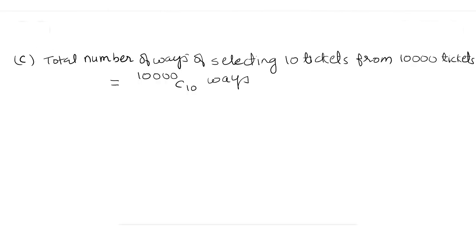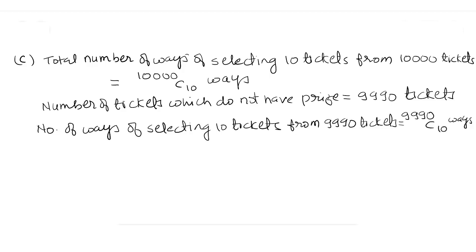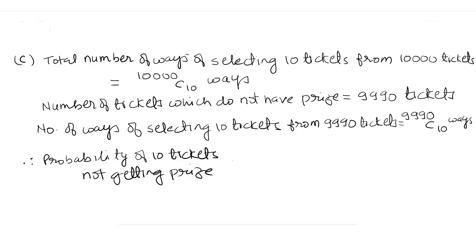Part C: total number of ways of selecting 10 tickets from 10,000 tickets equals 10,000C10 ways. The number of tickets which do not have a prize equals 9,990 tickets. The number of ways of selecting 10 tickets from 9,990 tickets equals 9,990C10 ways. Therefore, probability of 10 tickets not getting a prize equals 9,990C10 upon 10,000C10.